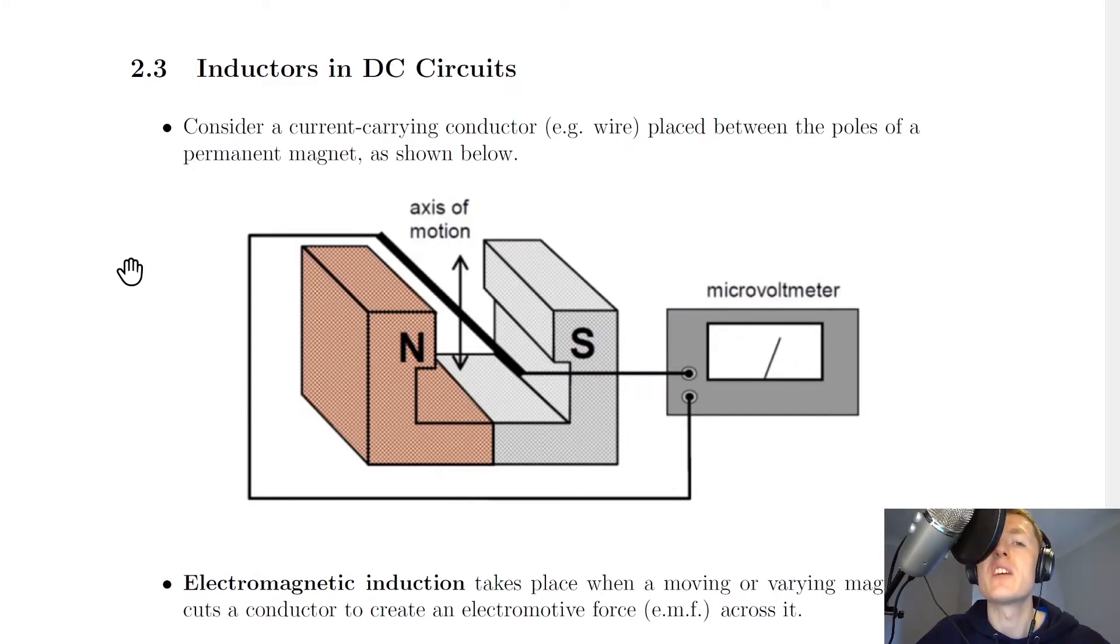Before we look at what an inductor actually is, we need to understand what is meant by electromagnetic induction. So consider a current carrying conductor, for example a wire, placed between the poles of a permanent magnet as shown below.